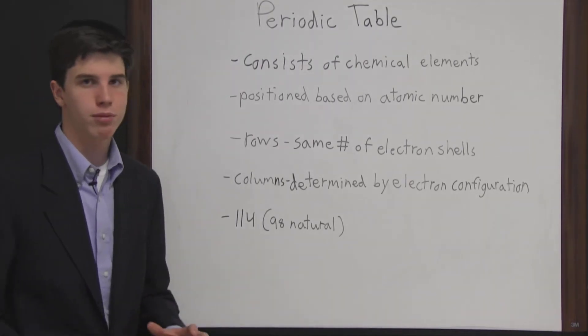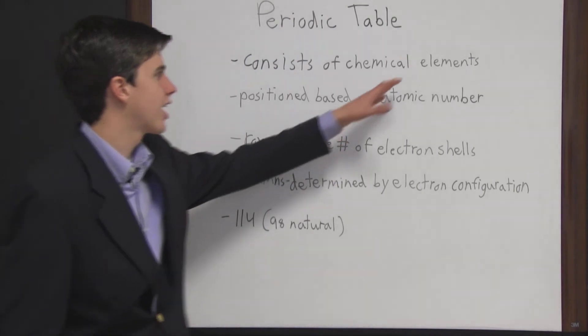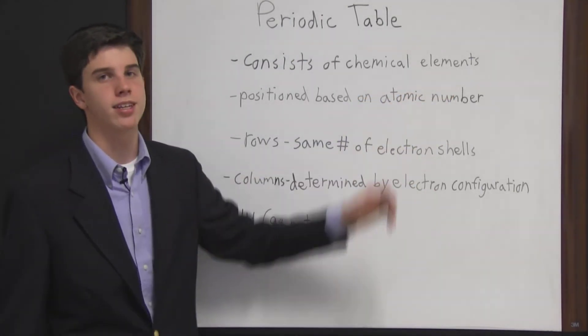So the important thing to remember about the periodic table is that it consists of chemical elements and it is arranged by atomic number.